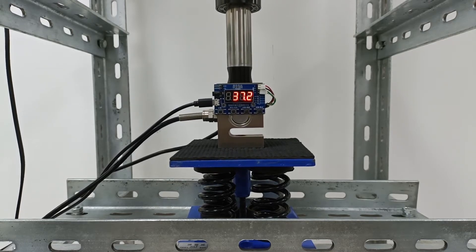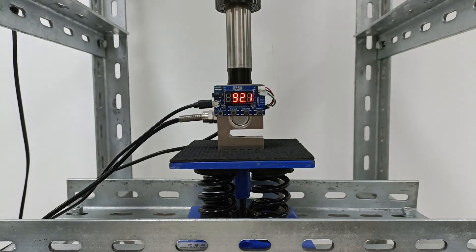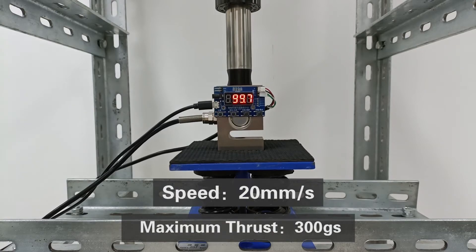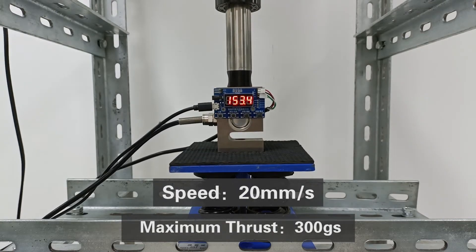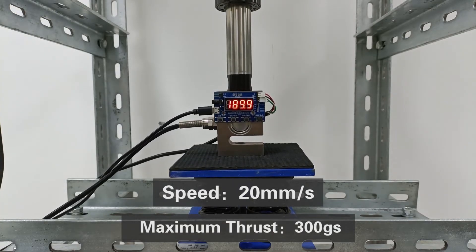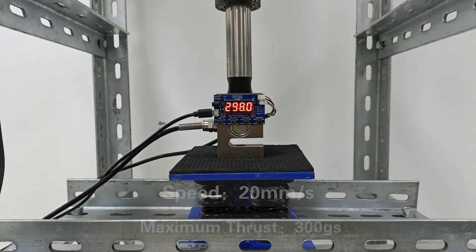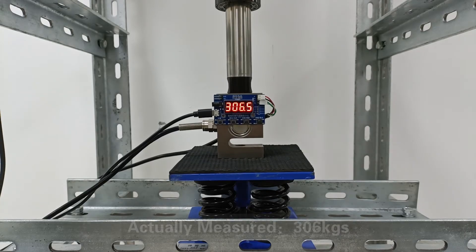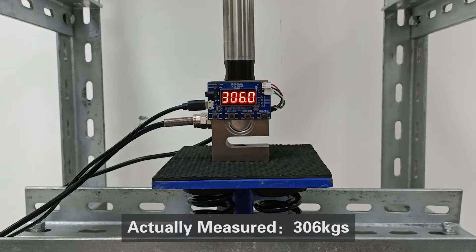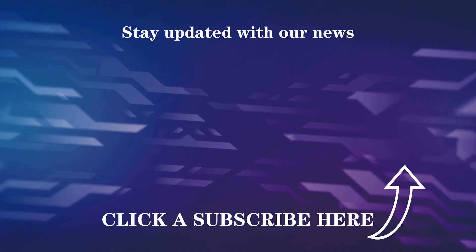Because the speed of this industrial linear actuator is 20 millimeters per second, its maximum thrust force should be about 300 kilograms. We actually measured it and got a real value of about 306 kilograms.